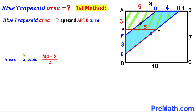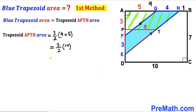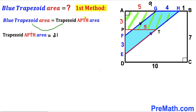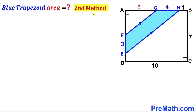Focusing on trapezoid APTH, the base TH is 5 plus 4, giving us 9 units. Recalling the trapezoid area formula: Area = height × (base_a + base_b) / 2. Our height is 3 and the bases are 5 and 9. So the area is 3/2 × (9 + 5) = 21 square units. The area of trapezoid APTH is 21, and since the blue trapezoid area equals this, the blue trapezoid area is 21 square units by method one.